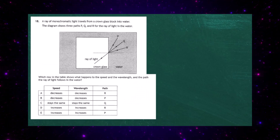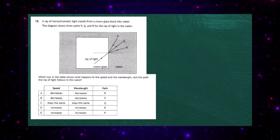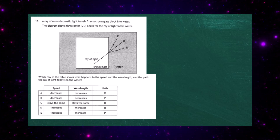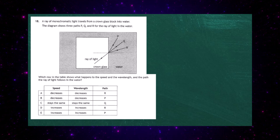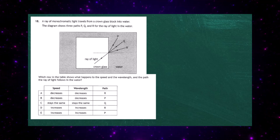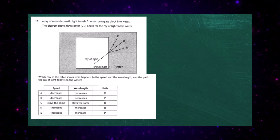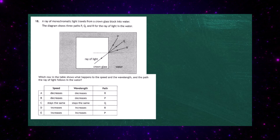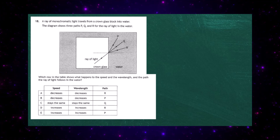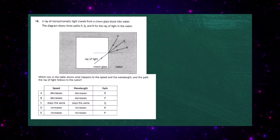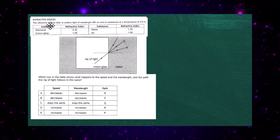Question 18 from Paper 1 of the 2023 Higher Physics Examination. A ray of monochromatic light travels from a crown glass block into water. The diagram shows three paths P, Q and R for the ray of light in the water. Which row shows what happens to the speed, wavelength, and path of the ray? First we must ascertain which material has the more dense optical medium — crown glass or water — by checking the information sheet. Crown glass has a refractive index of 1.50 and water has 1.33.